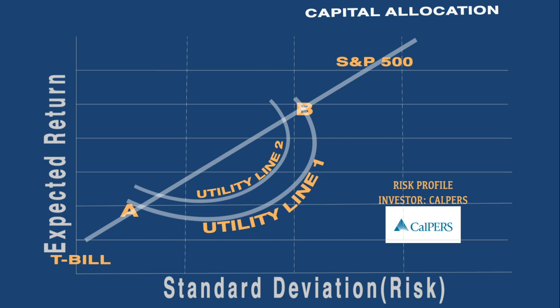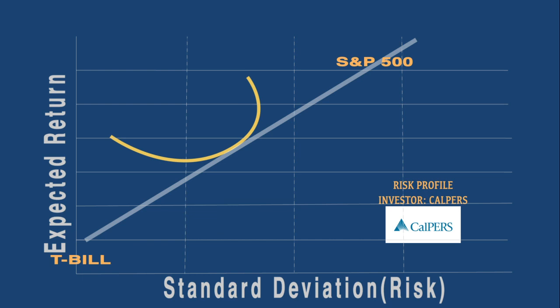Points C and D are preferred over points A and B. Pushing the indifference curve out even further, it no longer intersects the capital allocation line, so we move back slightly to the indifference curve that is just tangent to the capital allocation line. That tangency point describes the optimal allocation for this investor.